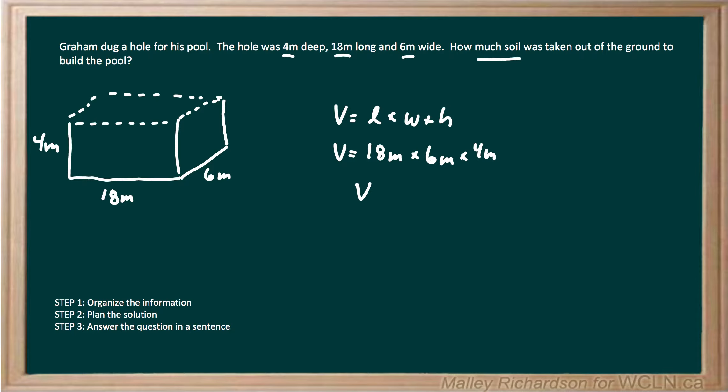Now we have 18 times 6 times 4, to give us a total volume of 432. Our units are meters cubed, because we have meters times meters times meters, to give us meters cubed.